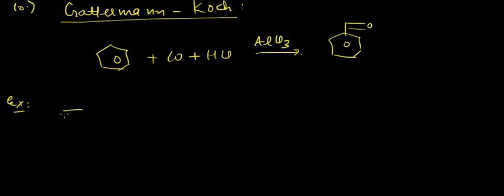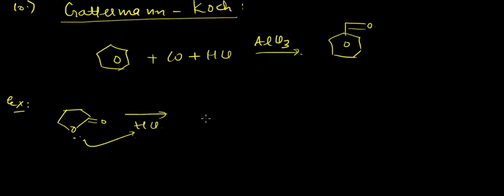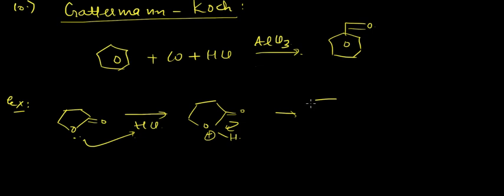Now let's see some more ways by which we can get aldehydes and ketones. In acidic medium, this compound's OH group will attack H+, and we'll get an oxonium ion (O+ with H). Next, this bond will be taken back by the oxygen atom and we'll get a positive charge and a double bond — a carbocation intermediate.